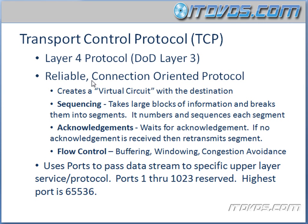TCP is reliable and connection-oriented; UDP is not. TCP creates a virtual circuit with the destination, so it actually creates a connection — we're going to see this virtual circuit in a second. TCP also uses sequencing, acknowledgements, and flow control.